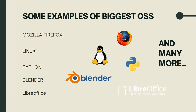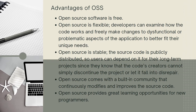These are some of the biggest open source software available on the web: Mozilla Firefox, Linux, Python, Blender, LibreOffice, and the list goes on. Once you start your own research, you will get to know more about these. There are also noted advantages of open source software — you can pause the video and read them.